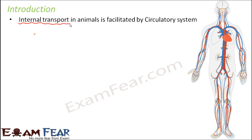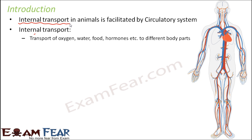The question is: what in the circulatory system actually helps to transport? The answer is the body fluids. What do they transport? Internal transport is the transport of oxygen, water, food, hormones, etc. to different parts of the body. All of these are essentials for survival — oxygen, water, food — and they must reach each and every cell of the body.